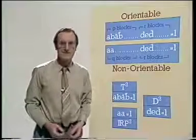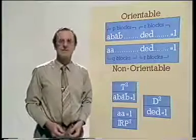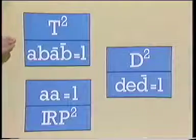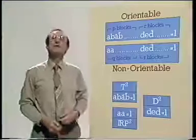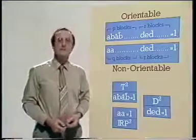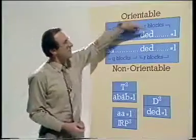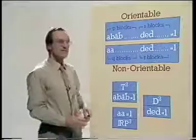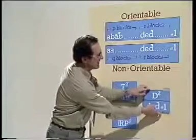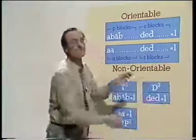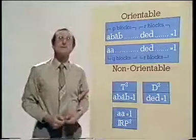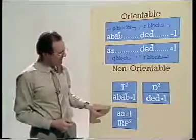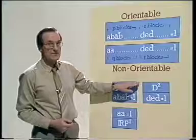Let's now go back to our original assertion that every surface, except the sphere, is a connected sum of copies of our three basic surfaces. We've been hinting that an orientable surface with P blocks like this and R blocks like this is the connected sum of P copies of a torus and R copies of a disc. Similarly, a general non-orientable surface is the connected sum of Q copies of a projective plane and R copies of a disc.